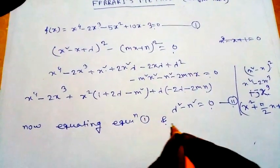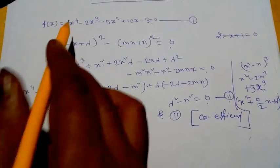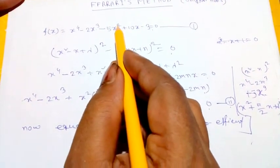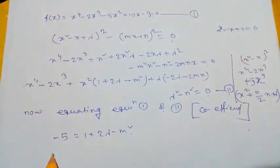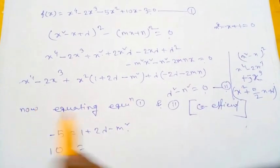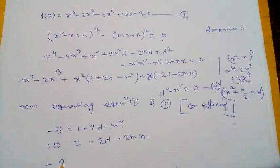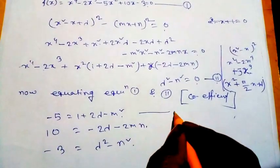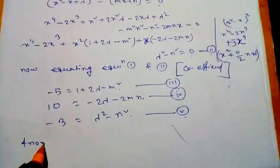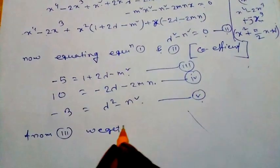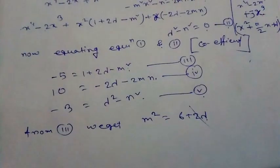Equating coefficients of equation 1 and equation 2: the x⁴ and x³ terms match. For the x² coefficient: -5 = 1 + 2λ - m², giving equation 3. For the x coefficient: 10 = -2λ - 2mn, giving equation 4. From equation 3, we get m² = 6 + 2λ.